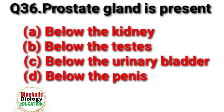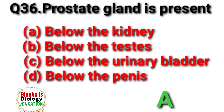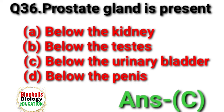Question 36. Prostate gland is present. Option A: below the kidney. B: below the testes. C: below the urinary bladder. D: below the penis. Answer is C.